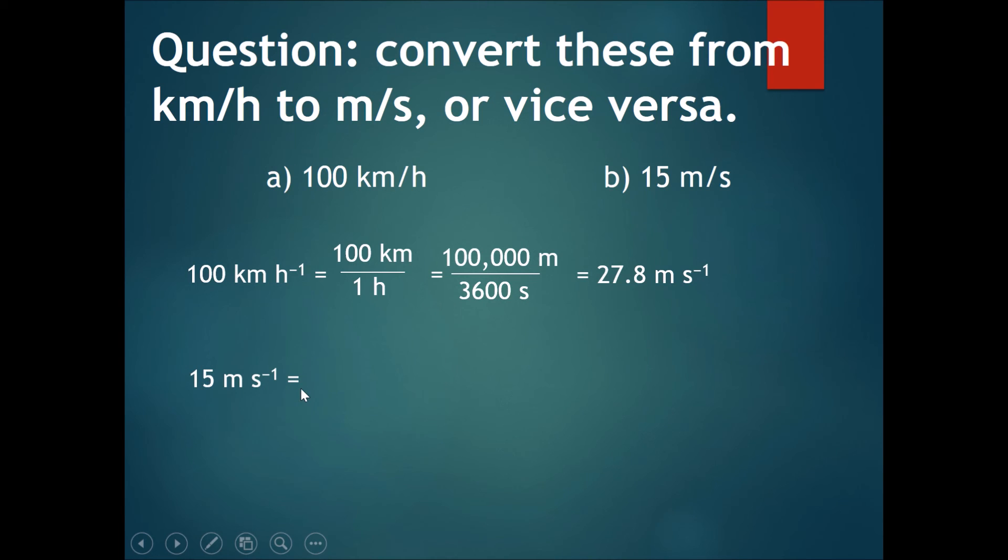The second one, 15 meters per second converting to km per hour. We do the same thing again: 15 meters divided by one second. This gives you 0.015 km divided by one over 3600 hours. After finishing the calculations you should get 54 km per hour.